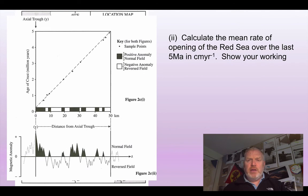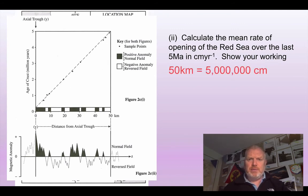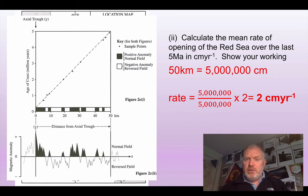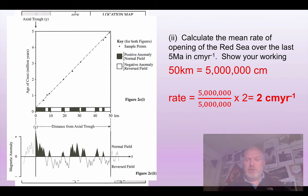Finally, working out the mean rate of opening of the Red Sea over five million years — there is a small sting in the tail here. We can see that over five million years, 50 kilometers of new oceanic crust has been created from the axial trough to the continent. That 50 kilometers is five million centimeters, so five million centimeters in five million years equals one centimeter per year. However, the question asks for the rate of opening — what we're seeing is only half of it. We need to multiply by two because opening occurs in both directions from the plate margin. So the answer is two centimeters per year.